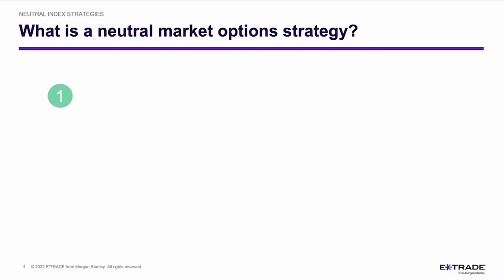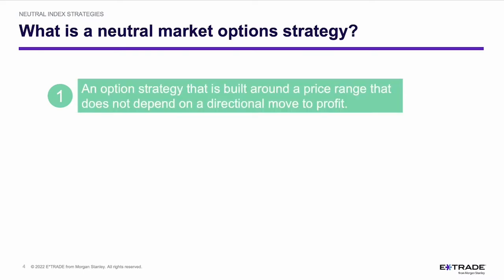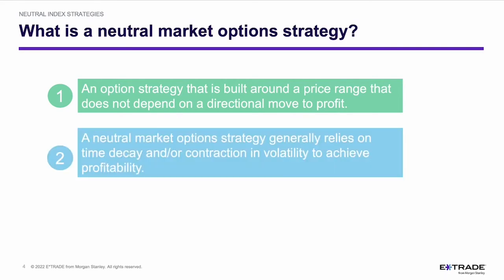A neutral market option strategy is built around a price range — it does not depend on a directional move to profit. If you think about just buying a call, the underlying will need to move higher in order for you to achieve a profit at expiration. And with a put, if you're long a put, it will need to move lower in order for you to achieve a profit by expiration. A neutral strategy is not dependent on a directional move.